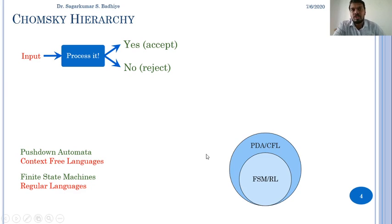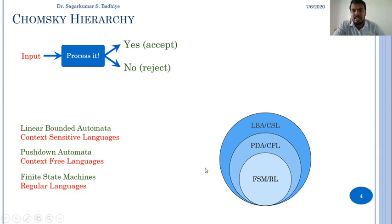The next higher level of languages are the context-free languages which are represented by the abstract machine known as push-down automata which is a bit complex as compared to finite state machines.